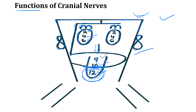Lastly, drawn to look like the number 11, cranial nerve 11 is the spinal accessory nerve — a purely motor nerve responsible for shoulder shrugging and head turning.